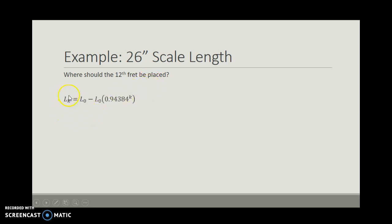Well, we know that the distance from the nut to the 12th fret should be L0 minus L0 times 0.94384. Now, L0 is just the scale length, so it's 26 inches. And so I need to compute this now. So that's 26 times 0.94384 to the 12th power. It's going to be about 13, pretty close, about 12.99, just because we rounded this 1 divided by 1.05, 1 divided by the 12th root of 2, and that comes out to about 13.